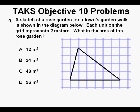Problem 9. A sketch of a rose garden for a town's garden walk is shown in the diagram below. Each unit on the grid represents 2 meters. What is the area of the rose garden? This is quite a straightforward problem. To do this, we need to know how to find the area of a triangle, and that would be to take the formula A equals 1 half base times height. The next thing we need to do is to read very carefully. Each unit on the grid represents 2 meters.